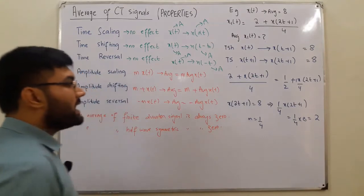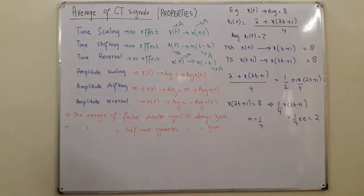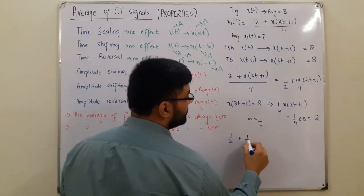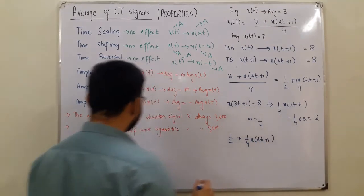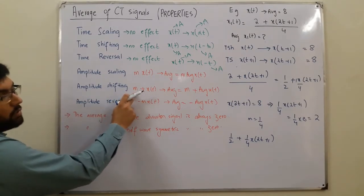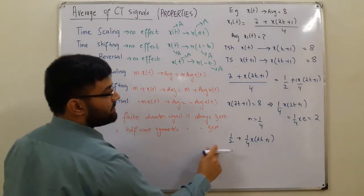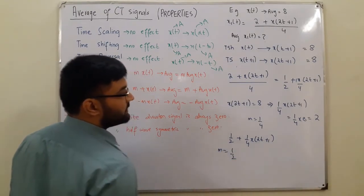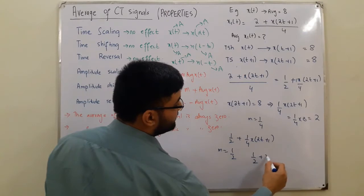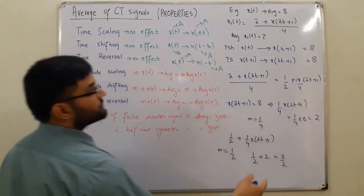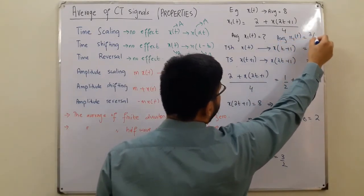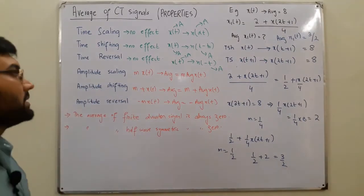Now we have average = 2, and we are adding 1/2 to (1/4)·x(2t + 1). Using the amplitude shift property, we shift by a value of 1/2. So the new average is 1/2 + 2 = 3/2. Therefore, the average value of x₁(t) is 3/2.